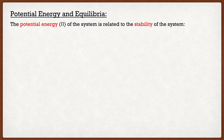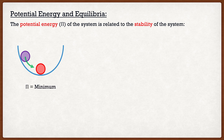To answer the first question, let's look at potential energy and equilibria. The potential energy of a system is actually related to the stability of the system. Let's say I had a ball placed inside of a tube. If I take the ball and move it a little bit to the left and release it, the ball is going to return to its original position. In this case, our potential energy of the system is actually at a minimum, and this means we have a stable equilibrium.